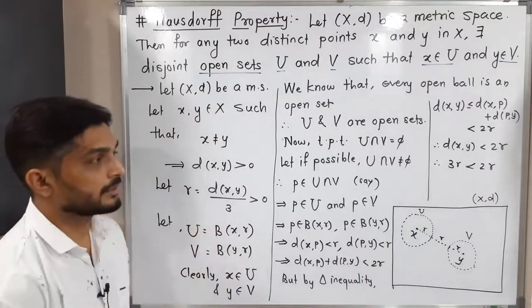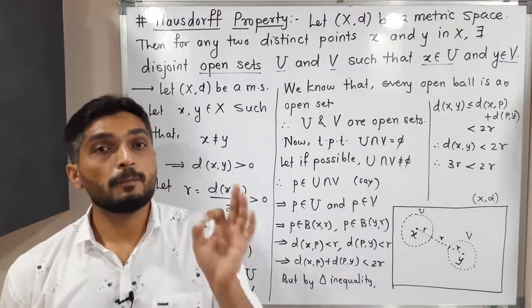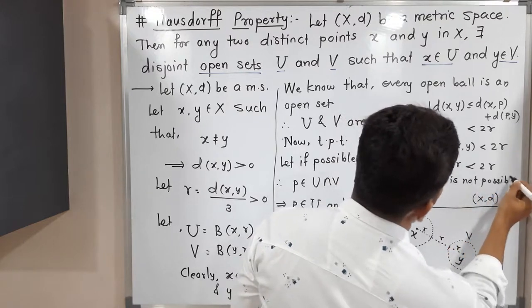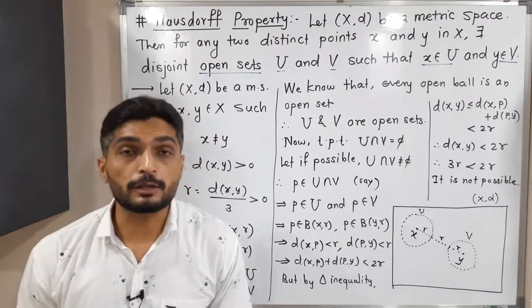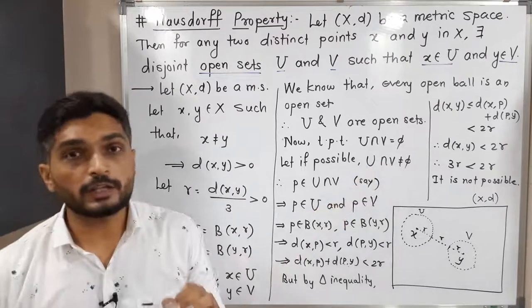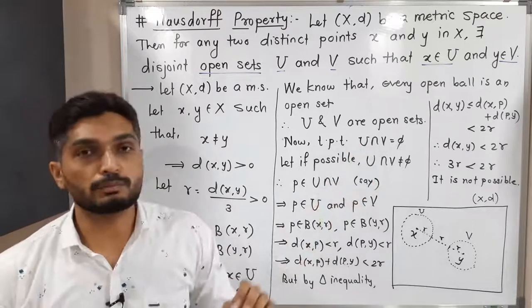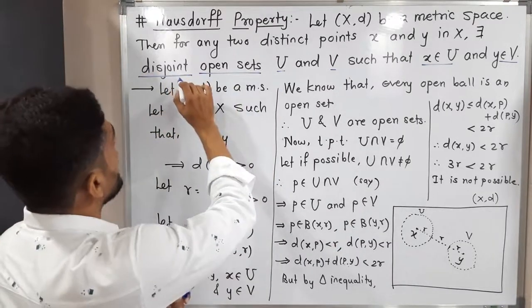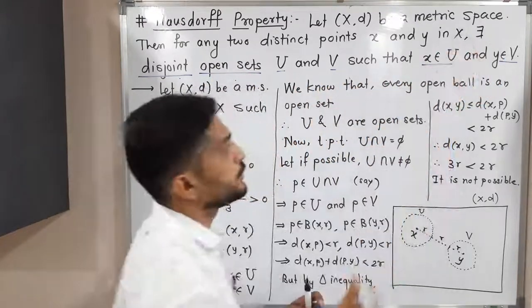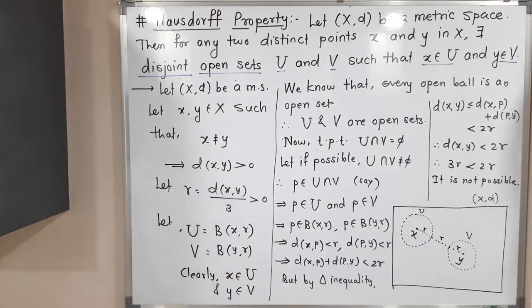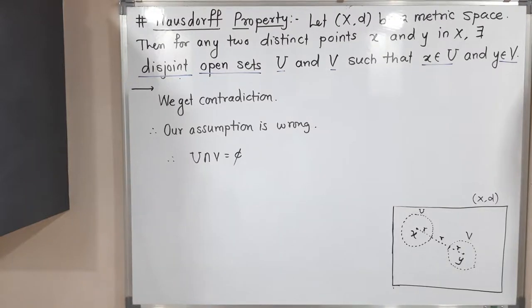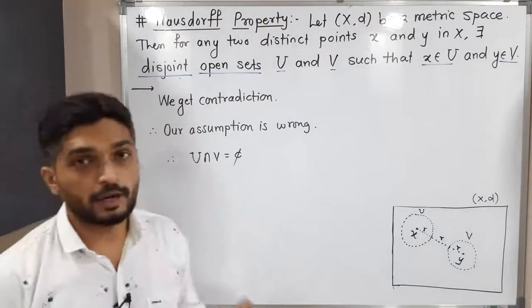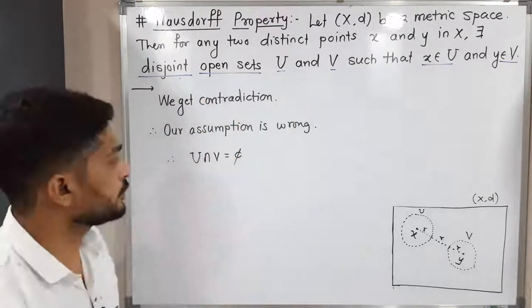But 3r < 2r is not possible since r is a positive real number. This is a contradiction. Therefore our assumption is wrong — U ∩ V ≠ ∅ cannot hold. Therefore U ∩ V = ∅, meaning U and V are disjoint. We have proved that both sets are open, disjoint, with x ∈ U and y ∈ V. Hence the result is proved.